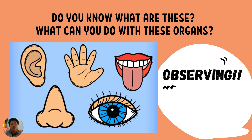So what can you do with these organs? You can use your ear to hear, you can use your hands to touch, you can use your tongue to taste, you can use your nose to smell, and you can use your eyes to see. All of this, we call it as observing. We can observe using these organs.